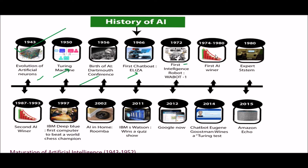In 1974 to 1980 was the first AI winter. Next, the expert system was invented in 1980. Leading to 1987 to 1993, this was the second AI winter. Next, in 1997, IBM Deep Blue became the first computer to beat a world chess champion.